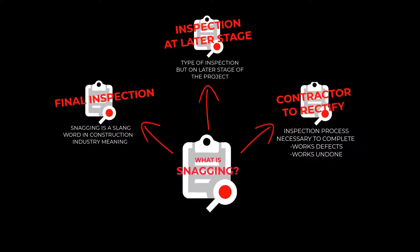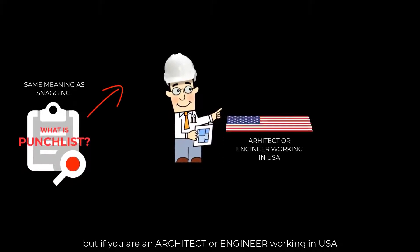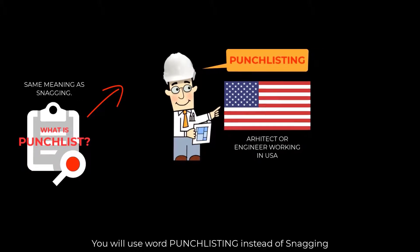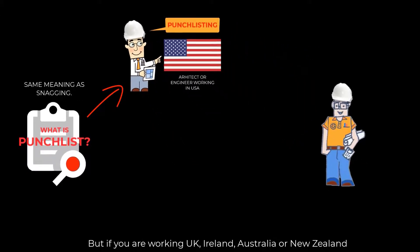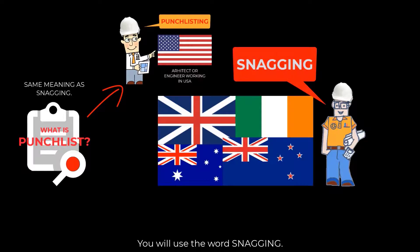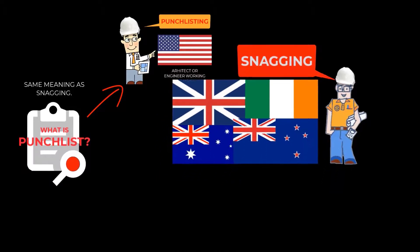You are now on module lecture two of five. What is a punch list? Basically, this is the same meaning as snagging. But if you're an architect or engineer working in the USA, you will use the word punch listing instead of snagging. However, if you're working in the UK, Ireland, Australia, or New Zealand, you will use the word snagging.